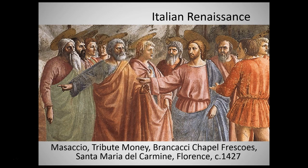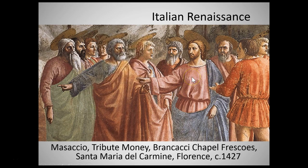Note the use of chiaroscuro — the contrast in shading from light to dark — where the drapery looks very modeled and three-dimensional. We get a sense of bodies underneath the drapery, a very Greco-Roman classical convention. There's a sculptural treatment of these figures, definitely looking back to Greek and Roman sculpture.